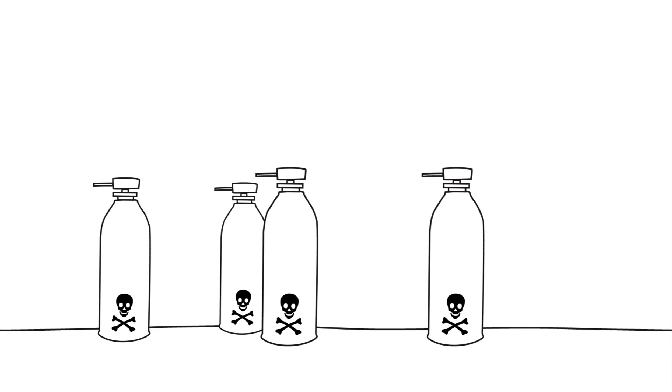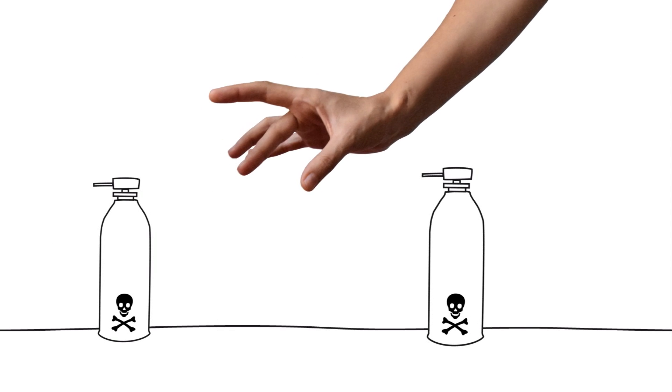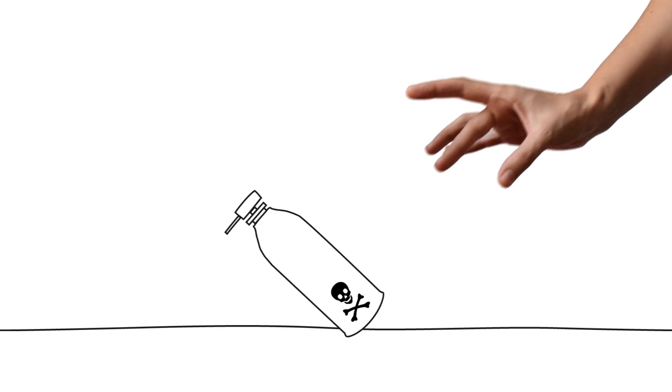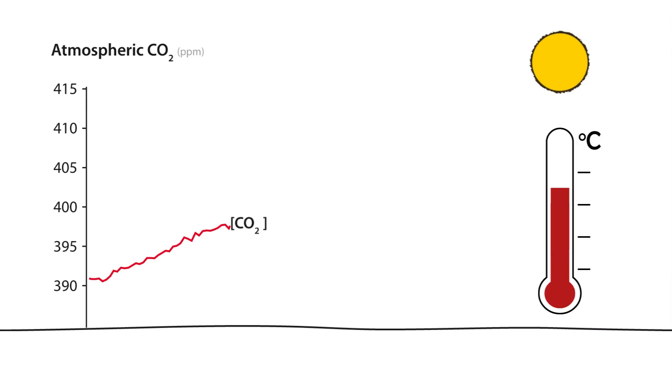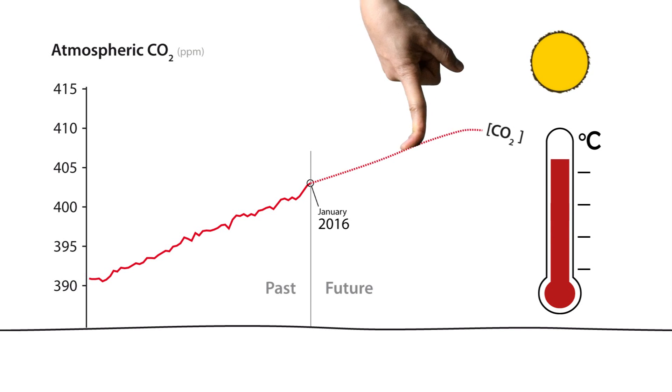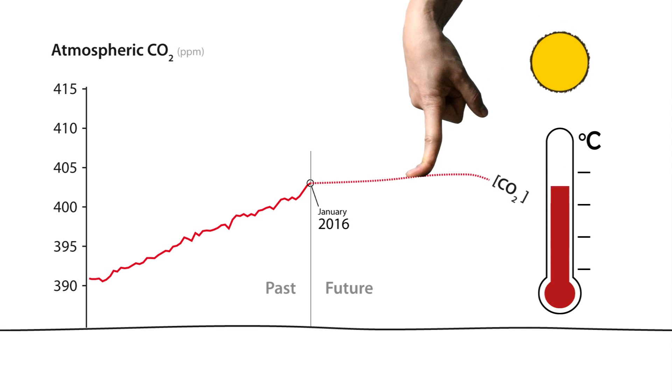We have to minimize pesticides, even avoid them if possible. We need to slow down global warming by reducing CO2 emissions. And that's not only for bees.